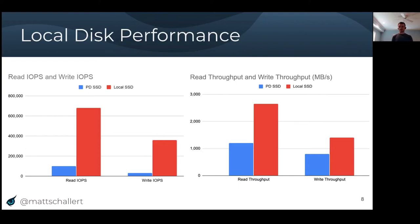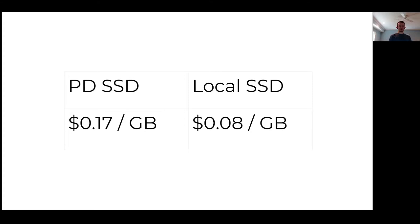But the real benefit is that in addition to being more performant, local disks are also much cheaper than remote storage. In GCP's case, local SSD storage costs 8 cents per gigabyte, whereas the fastest remote disk offering costs 17 cents per gigabyte.